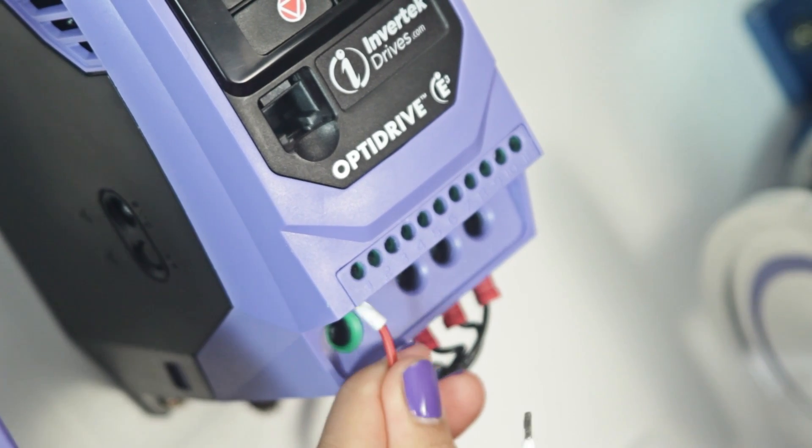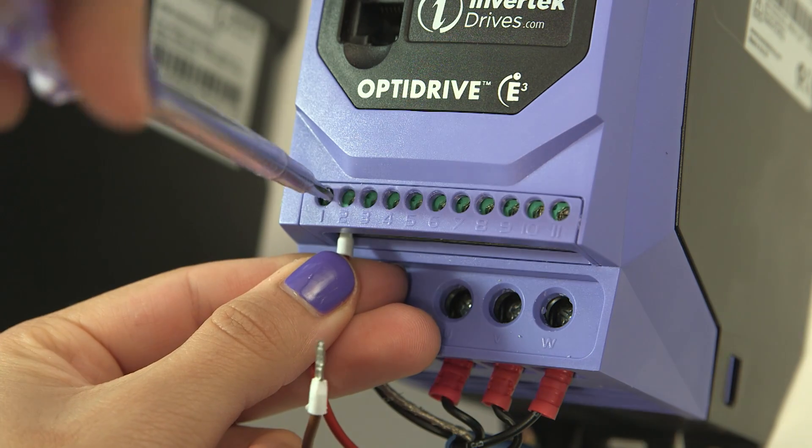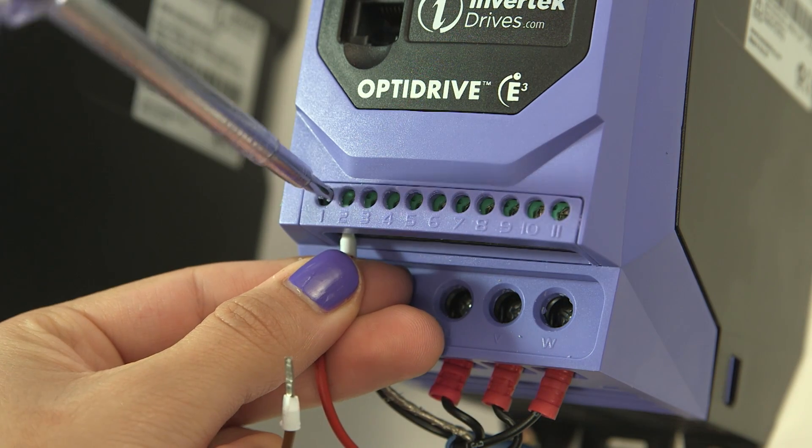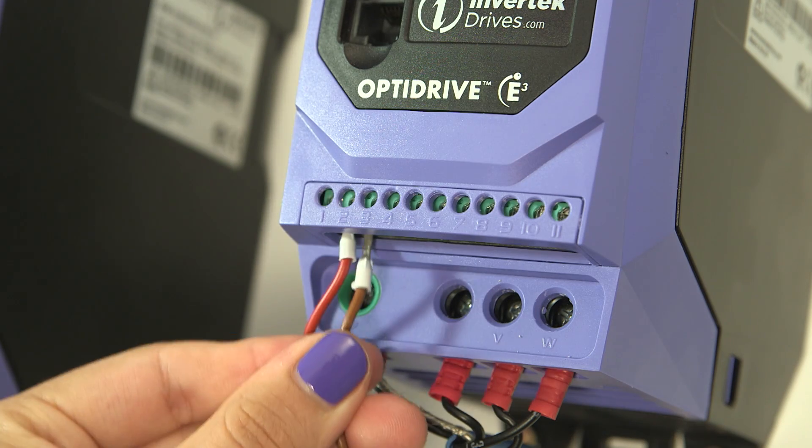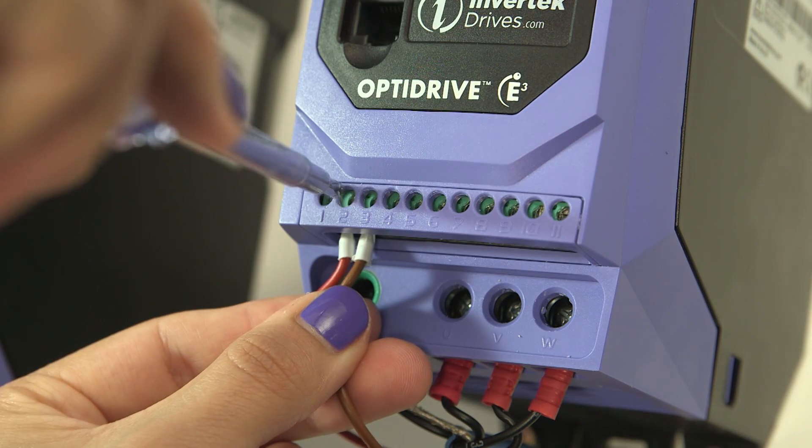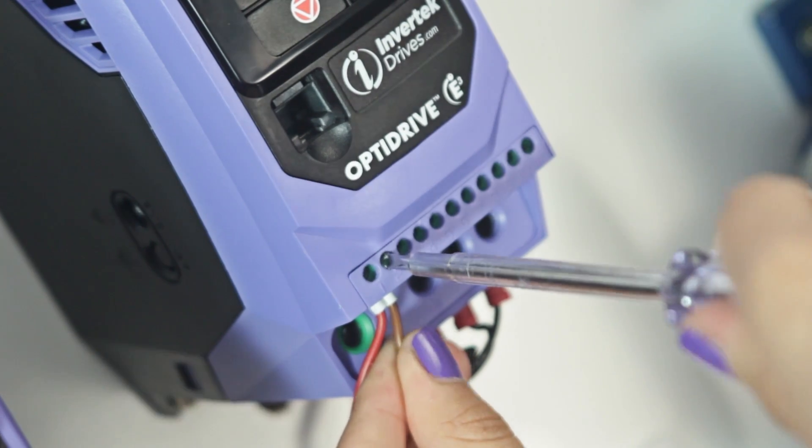Now for the controls. Connect an enable switch to terminals 1 and 2. You always need to make this connection even if you are controlling the drive from the built-in keyboard or from a serial link. A simple wire link can be fitted if necessary.